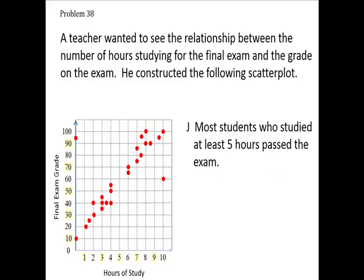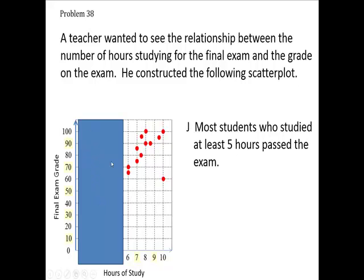So this has got to be the right answer here because all the others are gone. Most students who studied at least five hours passed the exam. I got one who scored a 60 and another who scored a 65, but all of these passed. This person got a 70, and you could say most students who studied at least five hours passed the exam.